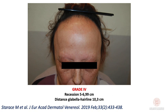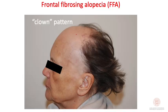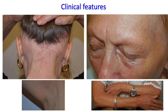Do not forget that severity does not correlate with the time of onset of the disease. Another possible pattern is the clown pattern, where involvement extends along the frontal line, as well as the parietal and sometimes occipital areas.